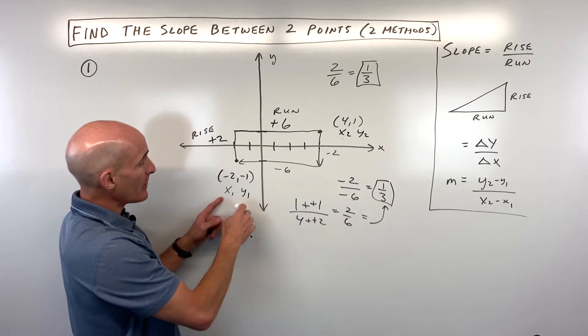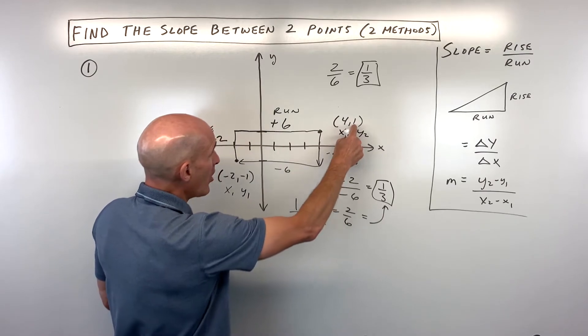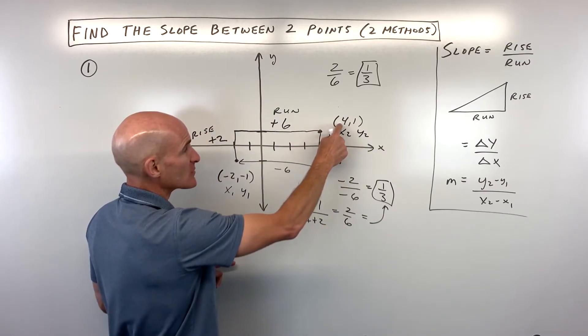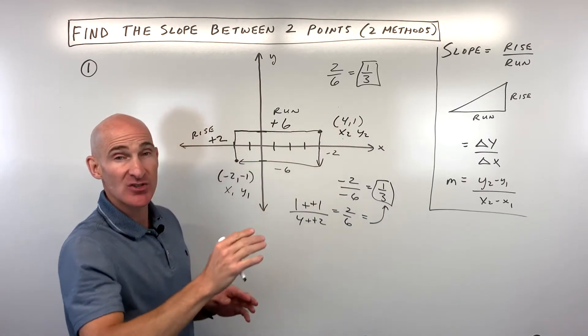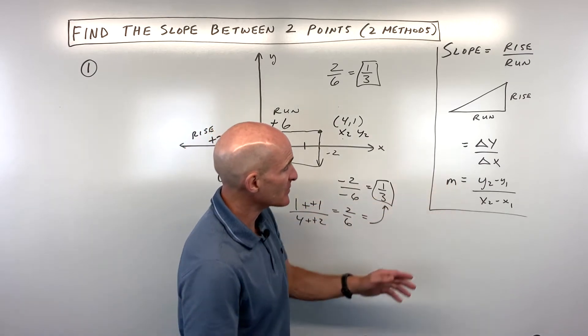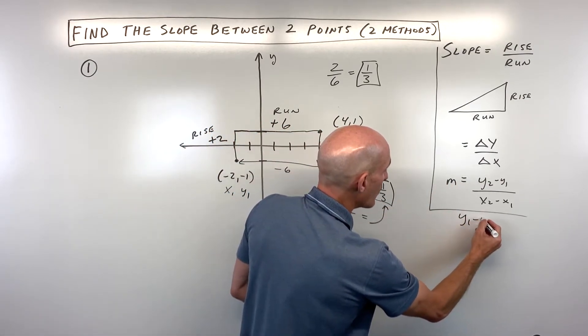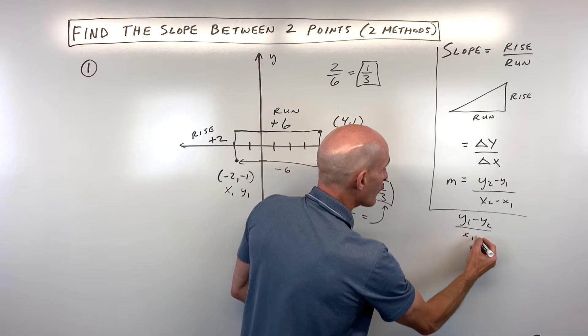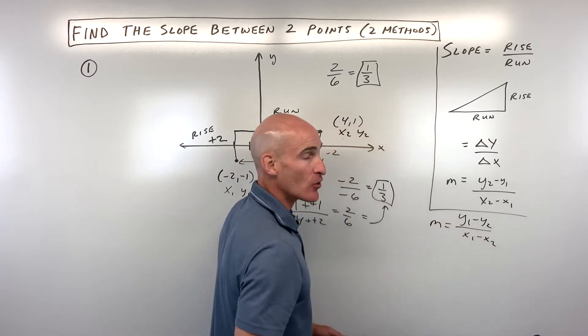We could switch it up. I could say negative 1 minus 1 over negative 2 minus 4. That's fine, but as long as you stay consistent. You can change up this formula if you want and say y1 minus y2 over x1 minus x2. That will give you the exact same slope.